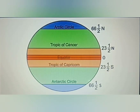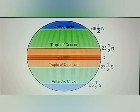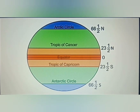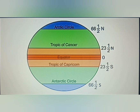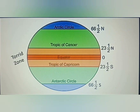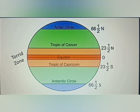The midday sun is exactly overhead at least once a year on all latitudes between the Tropic of Cancer and the Tropic of Capricorn. Thus, these areas receive the maximum heat of the sun and are called the torrid zone. The midday sun never shines overhead on any latitude beyond the Tropic of Cancer and Tropic of Capricorn, and the angle of the sun's rays goes on decreasing towards the poles.